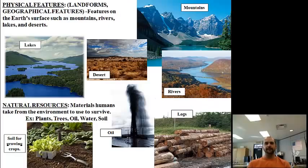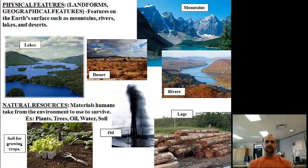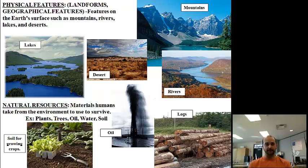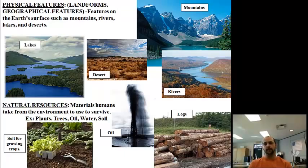The next definition is physical features, also called landforms or geographical features. They are features on the Earth's surface such as mountains, rivers, lakes, and deserts. In the United States, we have all of these — we're a very large country geographically. Here in upstate New York, Fulton County has about 44 lakes. We have the Adirondack Mountains, and many of you live less than 20 miles from them. Down in Montgomery County, about 10 miles away, you live near the Mohawk River.